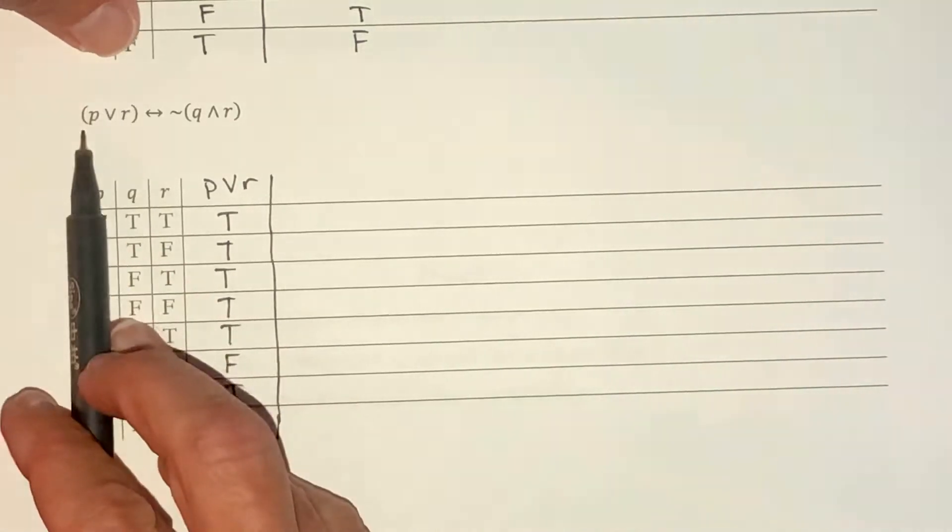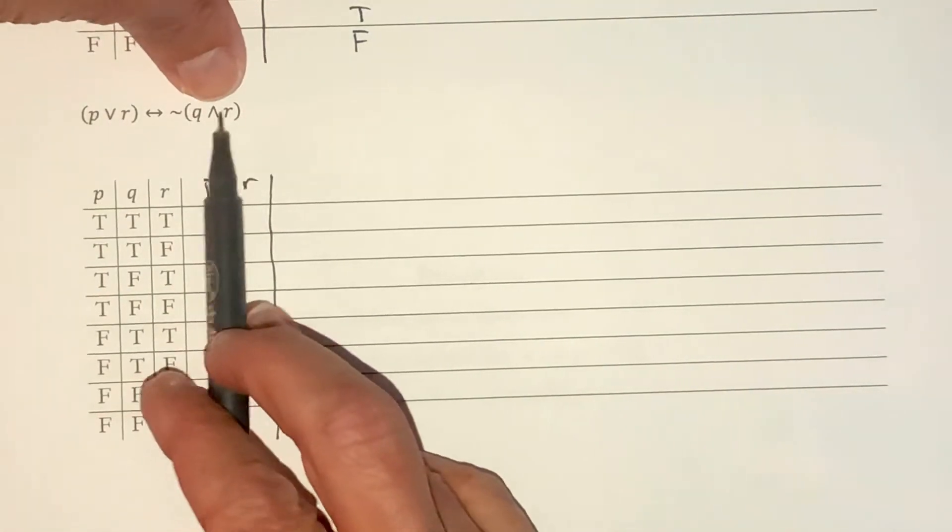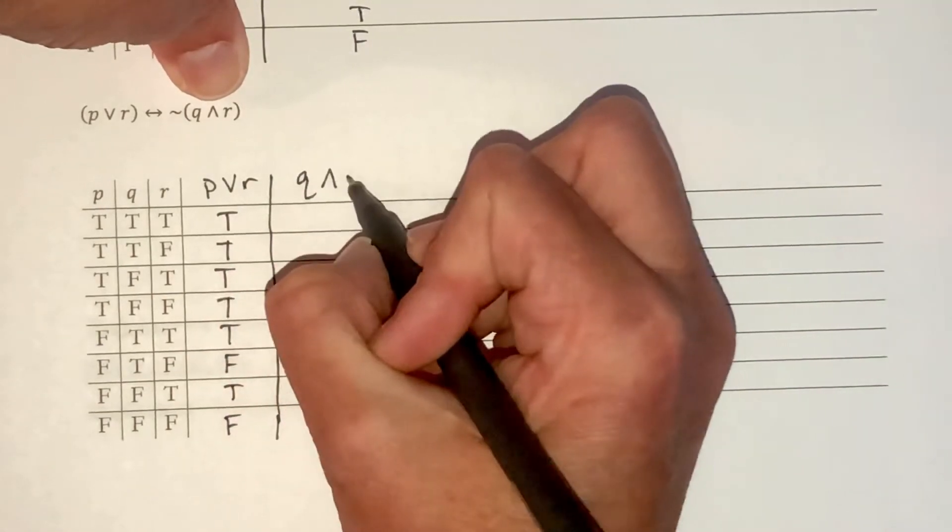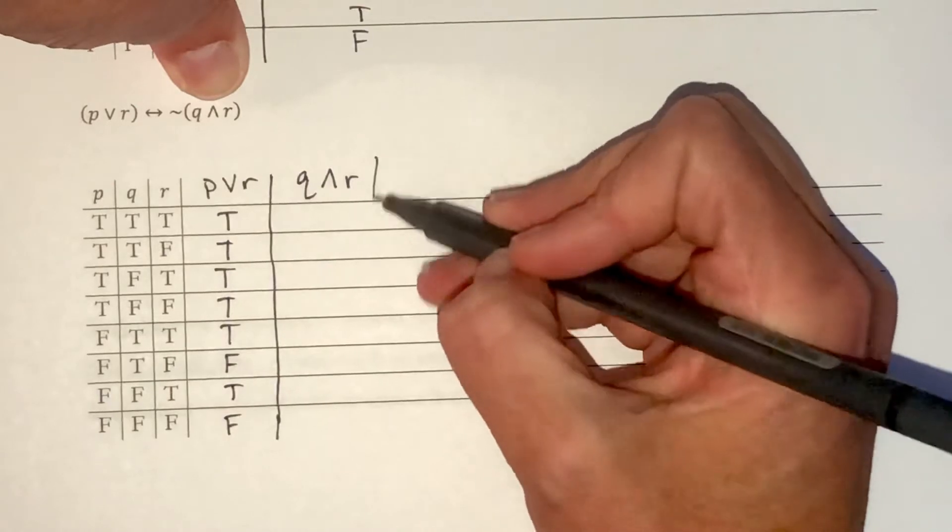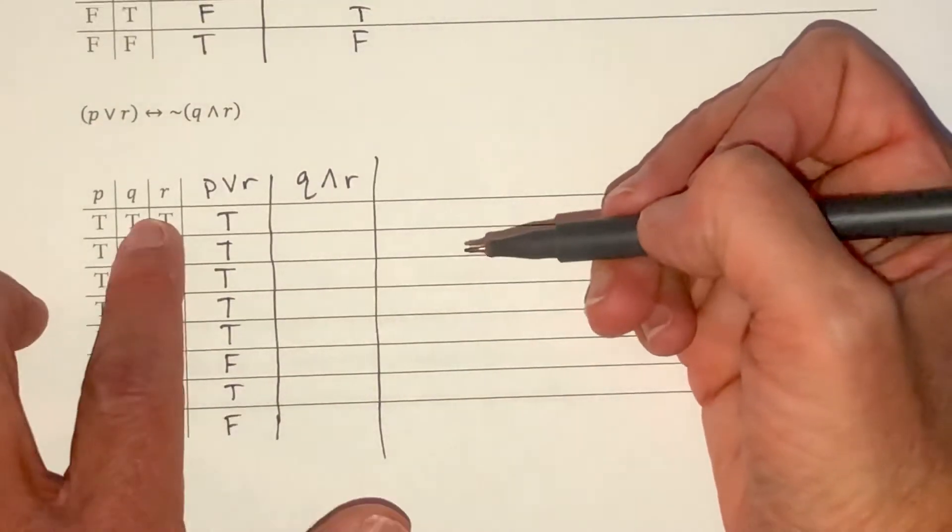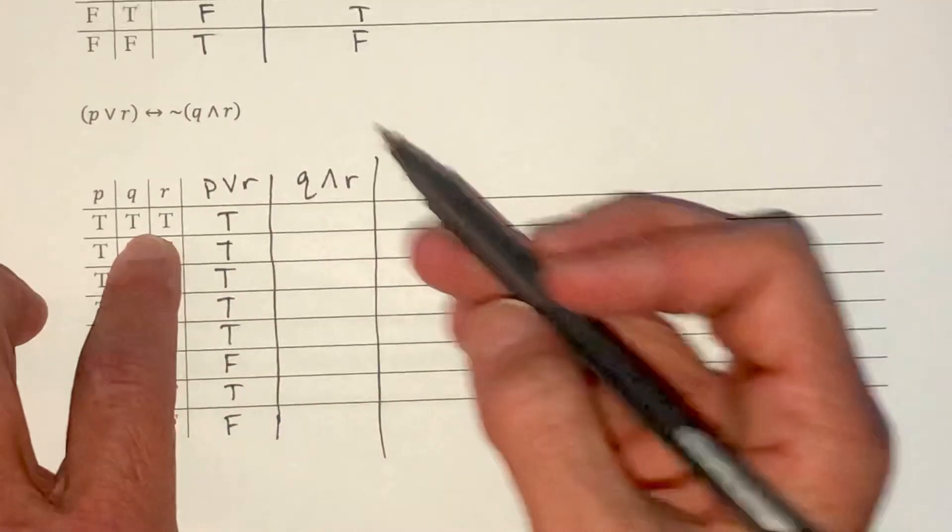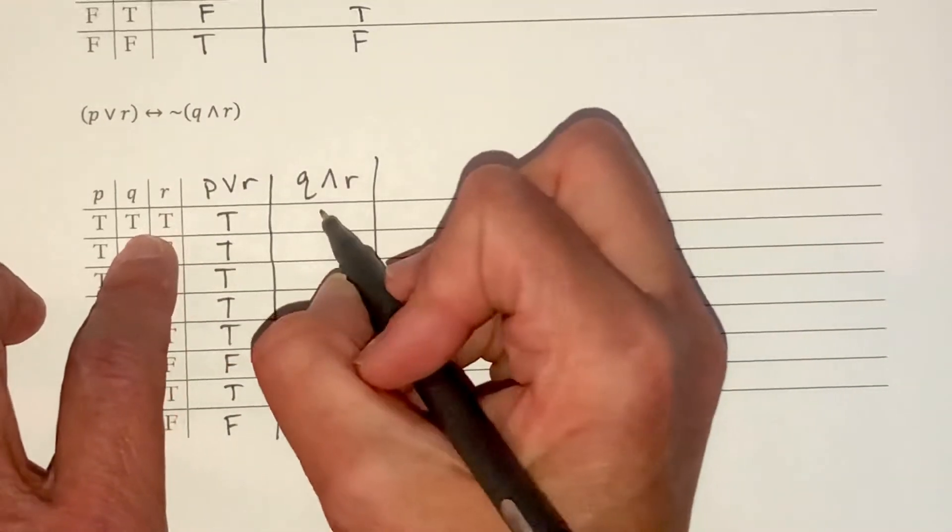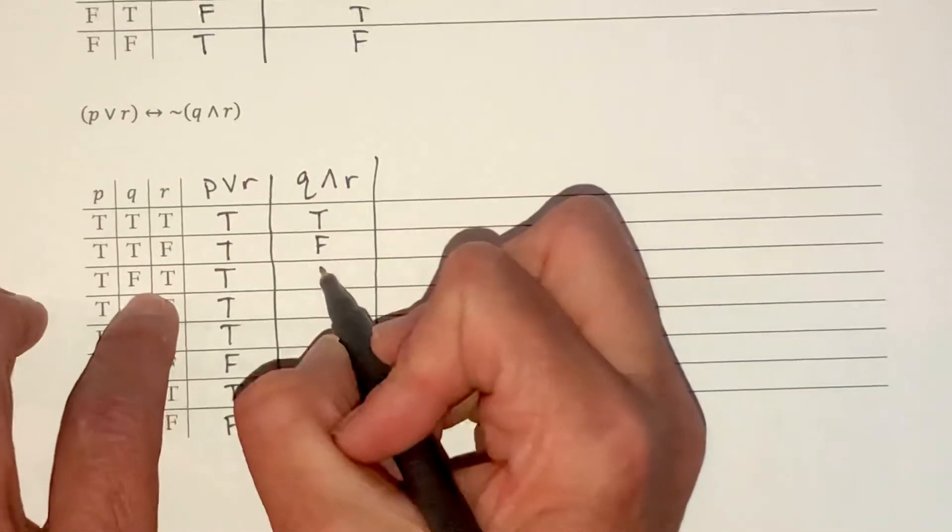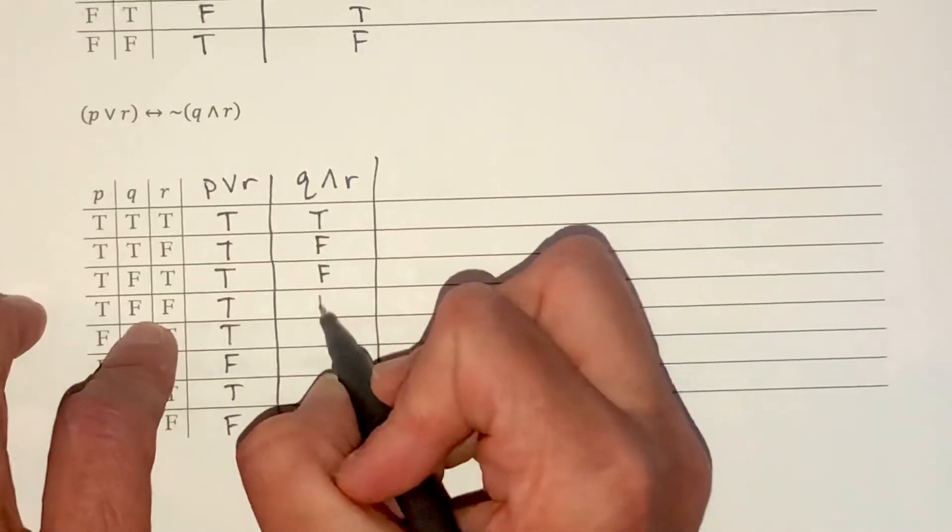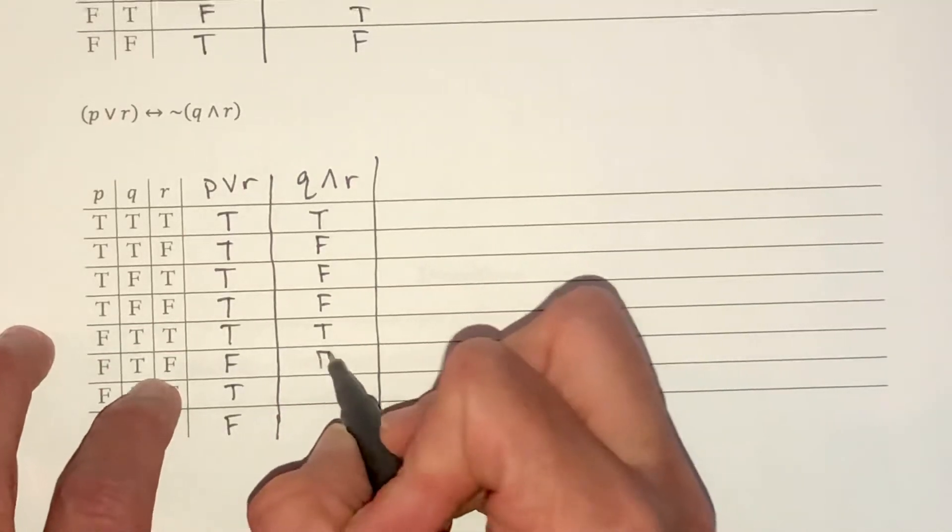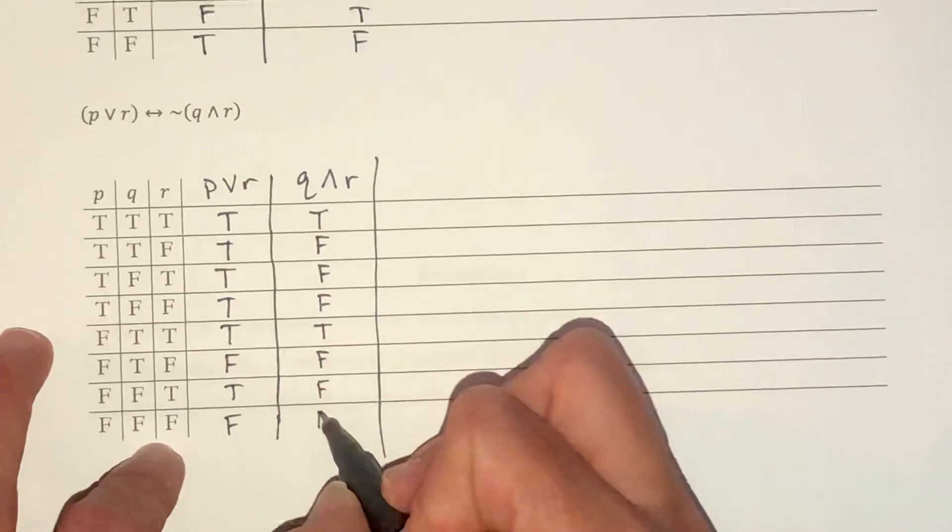So I figured out this part. Now I'm going to go and decide this set of parentheses. So that is Q and R. Now with and, it's only true when they're both true. And I'm looking at Q and R, so these two columns. True and true is true. True and false, that's false. False, that's false, that one's false. This one's true. False, false, and false.